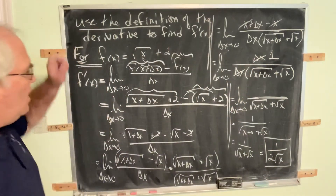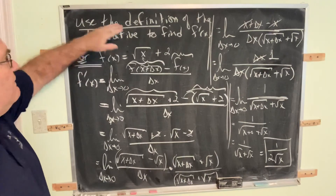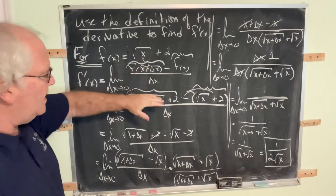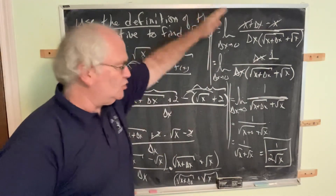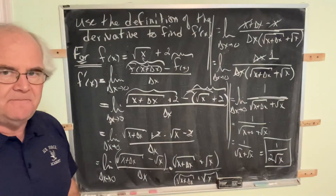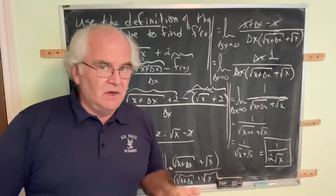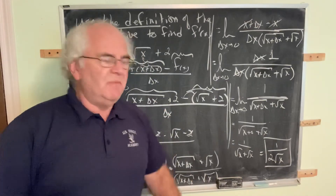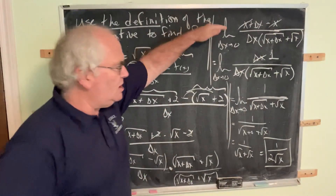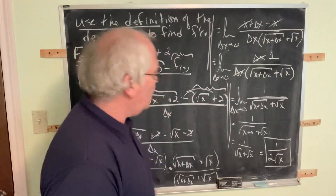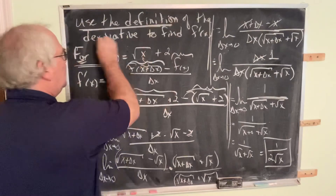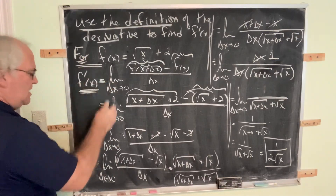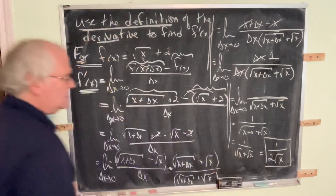That is the derivative of that function. Use the definition to find the derivative: limit of f of x plus delta x minus f of x over delta x, and then there is enough algebra to satisfy just about everybody. They always say you never really learn your algebra until you take calculus — well, here you go. The devil is in the details, but these are details you need to handle. You need to be able to use the definition to find the derivative. So f prime of x is equal to 1 over 2 square root of x — that's the derivative of the function.